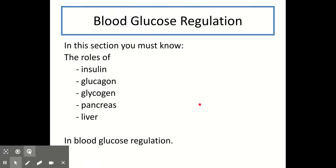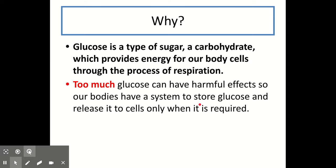The main part of this topic is learning about blood glucose regulation. By the end of this section you need to know the roles of insulin, glucagon, glycogen, the pancreas and the liver. We have discussed glucose previously when we covered respiration. Glucose is the type of sugar — a carbohydrate — which cells use in respiration to produce energy. However, it's actually a problem for the body if there's too much glucose in the bloodstream. So your body at all times must keep its blood glucose levels at a certain level, and we're going to look at how the body responds if blood glucose levels go above or below this normal level.